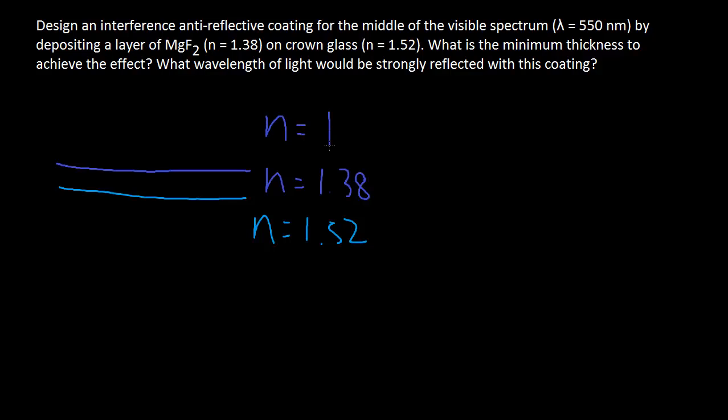Green light comes in, it bounces off, we have our first beam, bounces off the second thing, second beam.